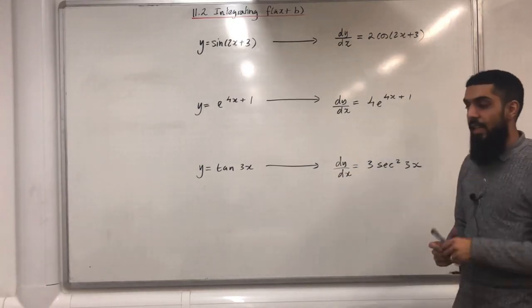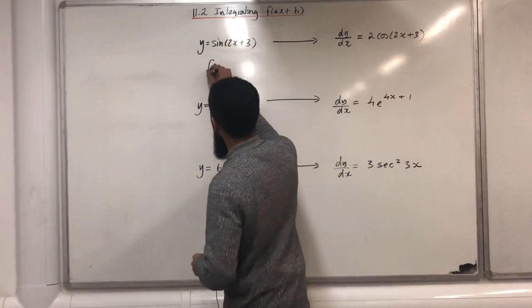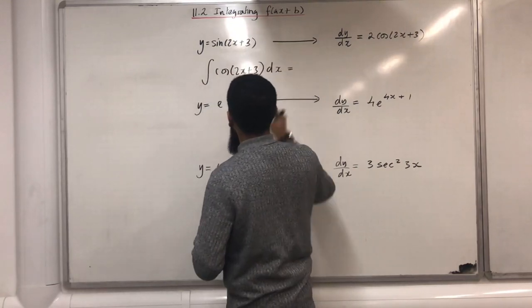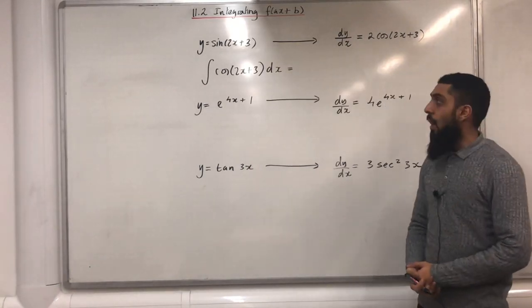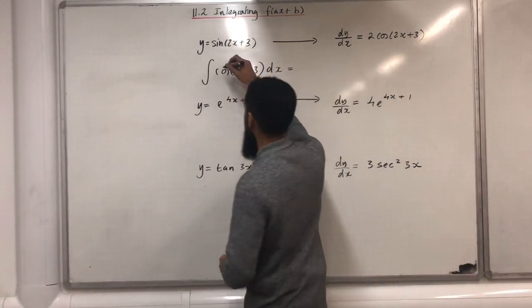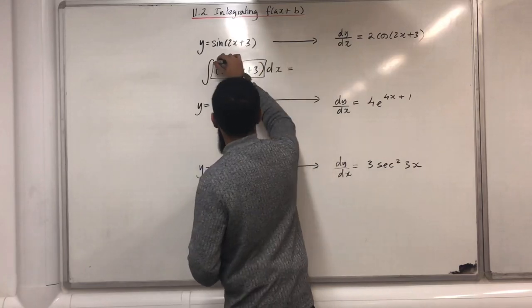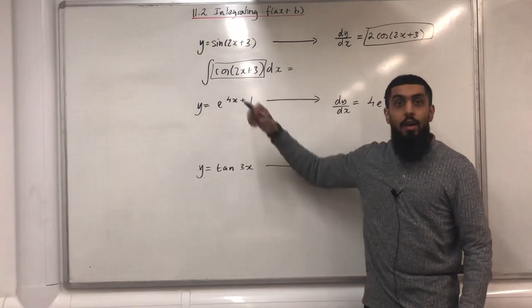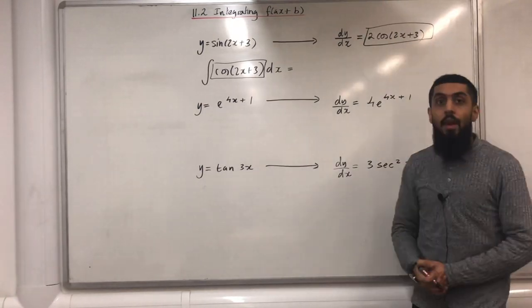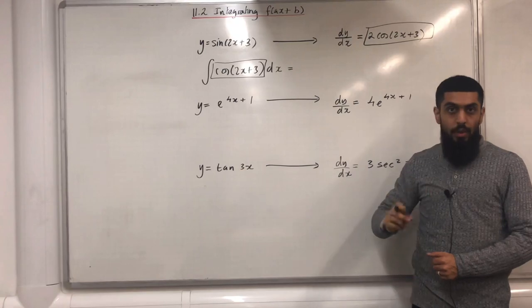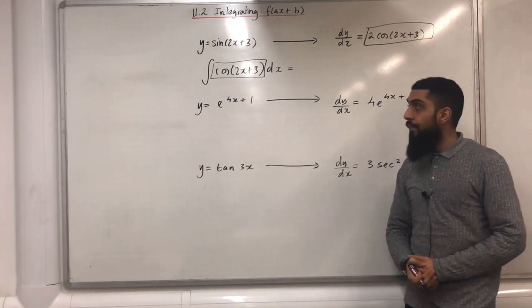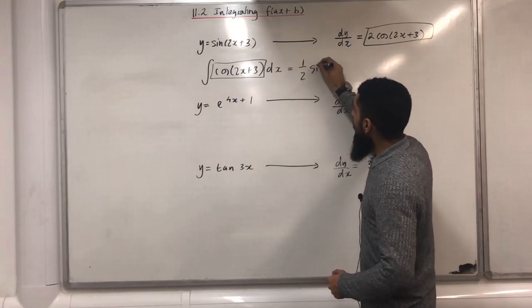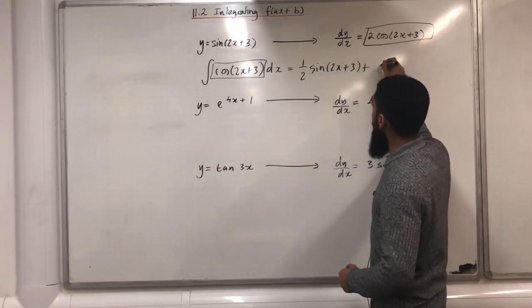Now I am interested in the following integral. How do I find this integral? Well, the first step is to put a rectangle around cos(2x + 3) and a rectangle around 2cos(2x + 3). The coefficient of cos here is 1 and the coefficient of cos over here is 2. How do I go from 1 to 2? I can divide by 2. Therefore the integral of this is just a half sine(2x + 3) + c.